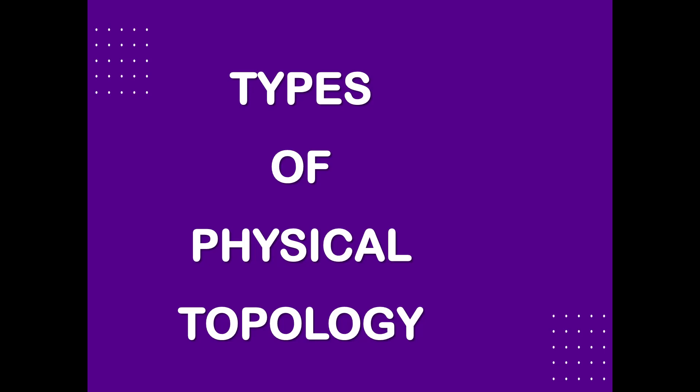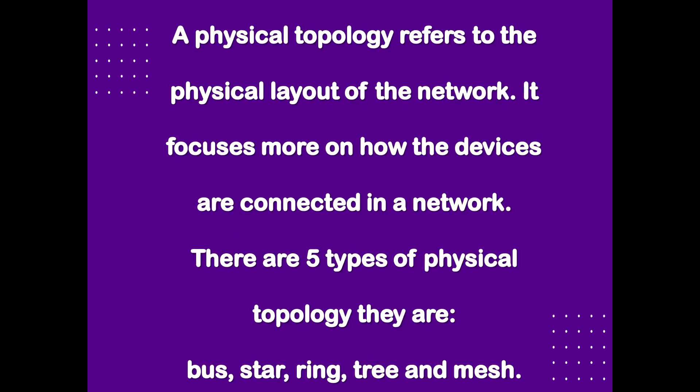Types of Physical Topology. A physical topology refers to the physical layout of the network. It focuses more on how the devices are connected in the network. It doesn't care about how they are exchanging data with each other, and that is done by Logical Topology. There are 5 types of Physical Topology.